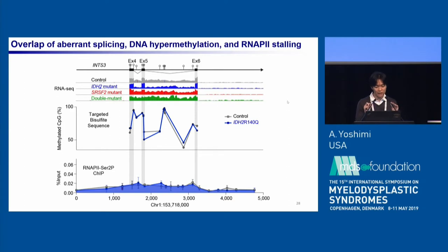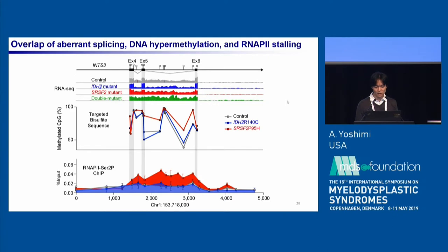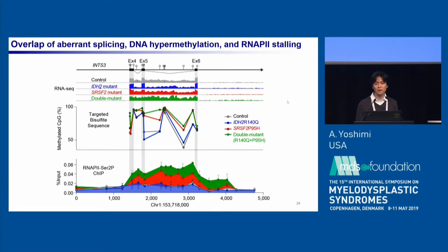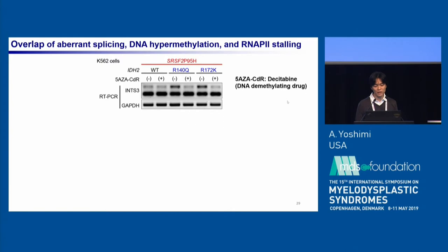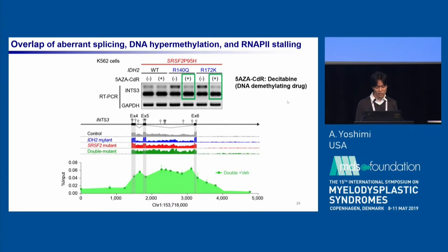We further analyzed the DNA methylation level and RNA Pol II abundance around the INT3 misspliced region using targeted bisulfite sequencing and ChIP experiments. SRSF2 mutant AML cells have higher DNA methylation level, which was coupled with RNA Pol II stalling, and double mutant cells had even higher DNA methylation and RNA Pol II stalling. When we treated SRSF2 mutant or double mutant cells with cytidine, this treatment significantly decreased the INT3 missplicing event, and RNA Pol II stalling was also decreased upon treatment.